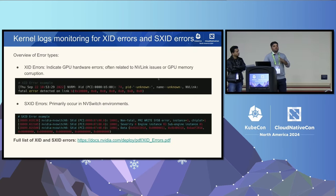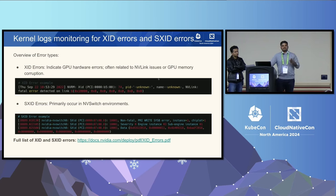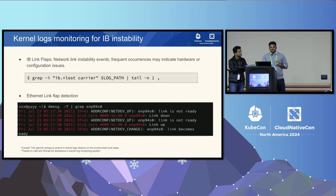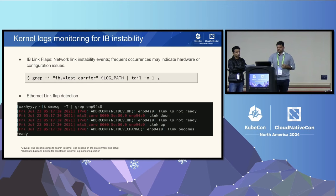To find XID or SXID errors, you can set up a watchdog on kernel logs and search for signature strings to determine whether an XID error has occurred. Kernel logs are the most reliable mechanism to detect XID and SXID given the ephemeral nature of these events — errors reported from NVSwitch are logged as SXID, and errors reported by the GPU driver are also logged as XID. Kernel logs can also help determine IB-related or network-related issues, such as IB link flaps, which can explain NCCL timeouts. Ethernet link flaps can be determined using dmesg, and these link flaps can also be the root cause of mysterious application failures.